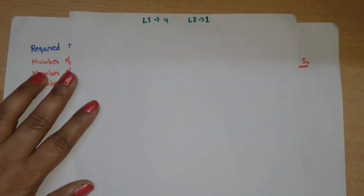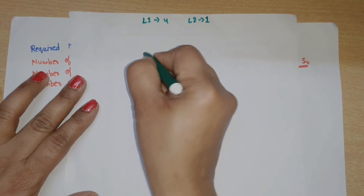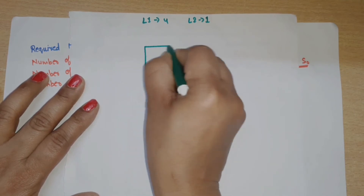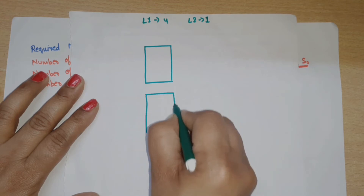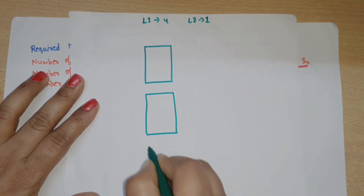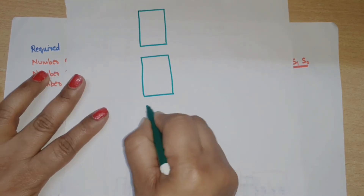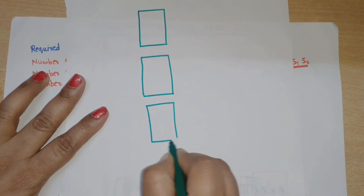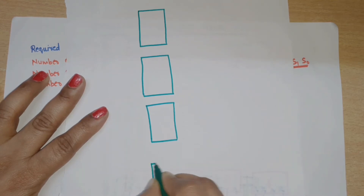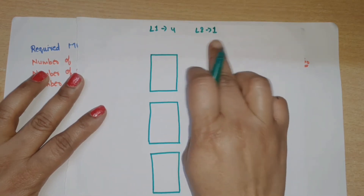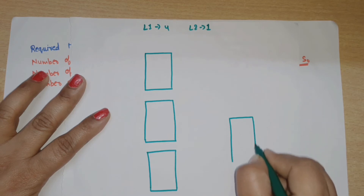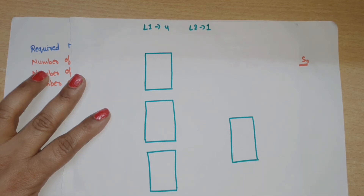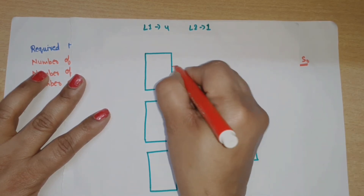Now we will draw the diagram. At Label 1 we draw 4 muxes — mux 1, mux 2, mux 3, and mux 4. At Label 2 we draw 1 mux. Each of the 4 muxes at Label 1 has 4 inputs and 2 selection lines.